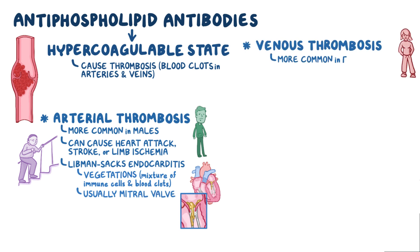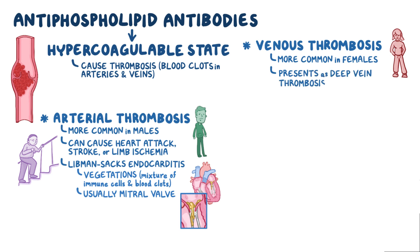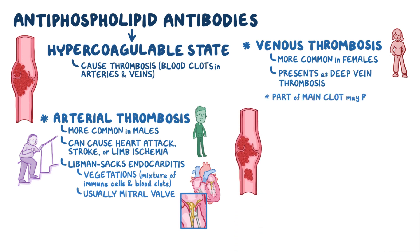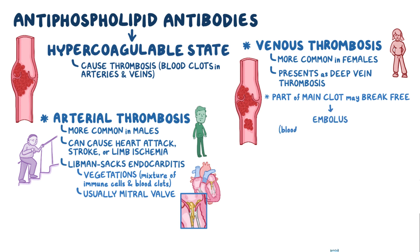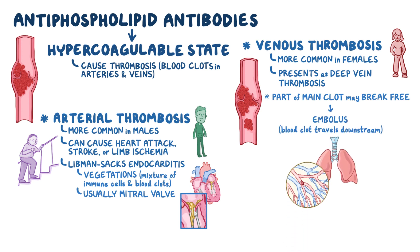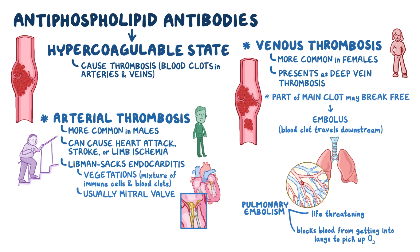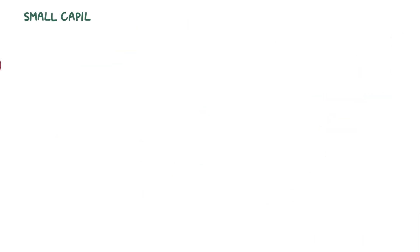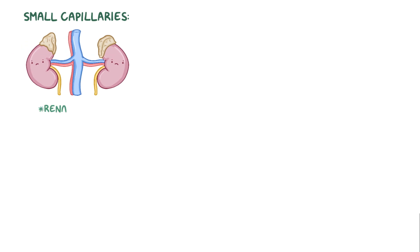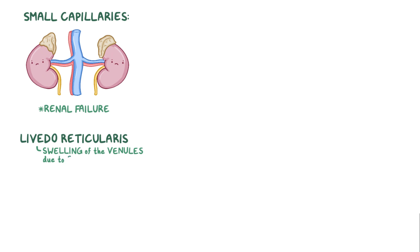Venous thrombosis is more common in females, and typically presents as a deep vein thrombosis. Sometimes a part of the main clot might break free and become an embolus, which is where a blood clot travels downstream. Since lung capillaries are very small, this embolus could get stuck, causing a pulmonary embolism — a life-threatening situation because it literally blocks blood from getting into the lungs to pick up oxygen. Another organ with very small capillaries is the kidneys, so individuals might develop renal failure. A typical skin finding in antiphospholipid syndrome is livedo reticularis, caused by swelling of the venules due to clots obstructing them, appearing as a mottled purplish discoloration of the skin.